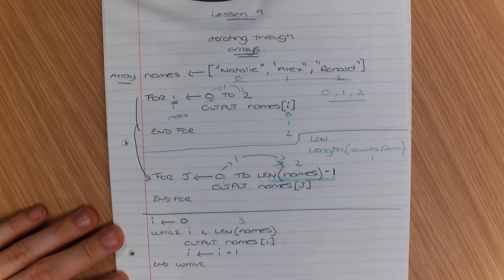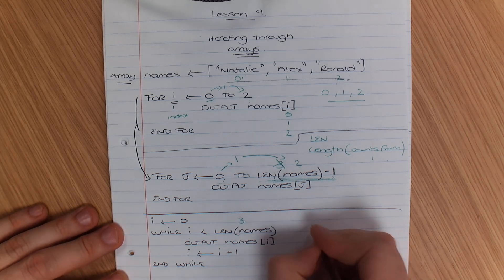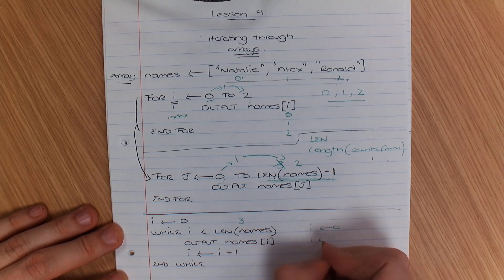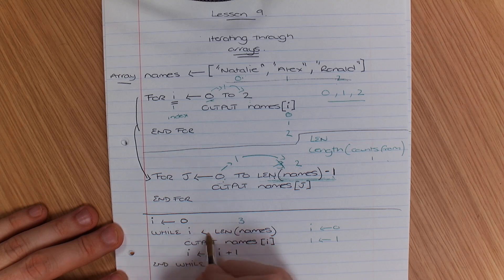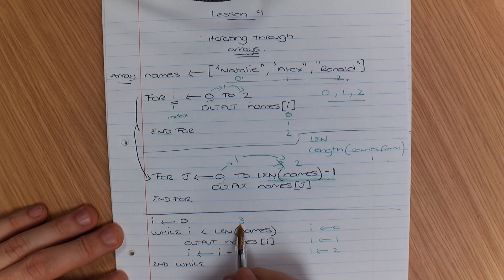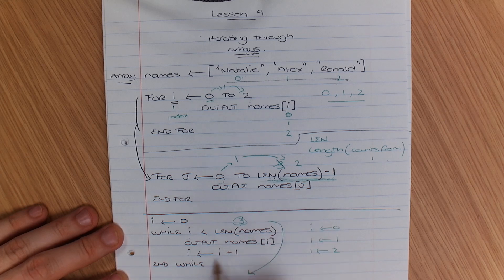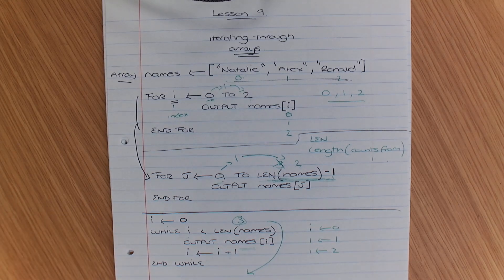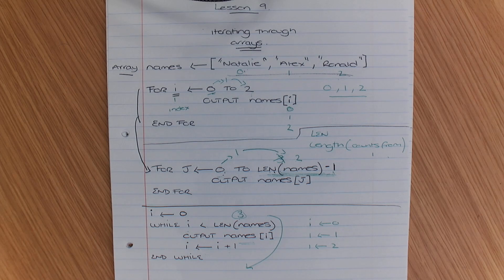Because that's going to be, i is going to be equal to 0 to begin with. Then i plus 1 makes it go up to 1. But then is it less than 3? Yes, it is. i will then become 2. Is it less than 3? Yes. But then the next time around, when it gets to 3, it's going to jump out the loop. So it won't output it. And it won't go out of range. So that's how you iterate through a single array.